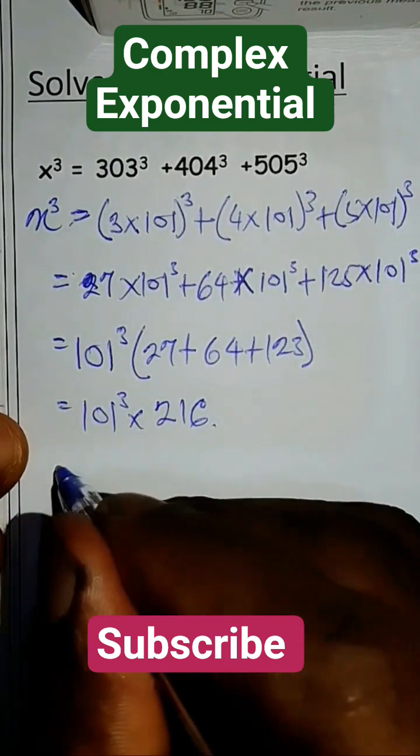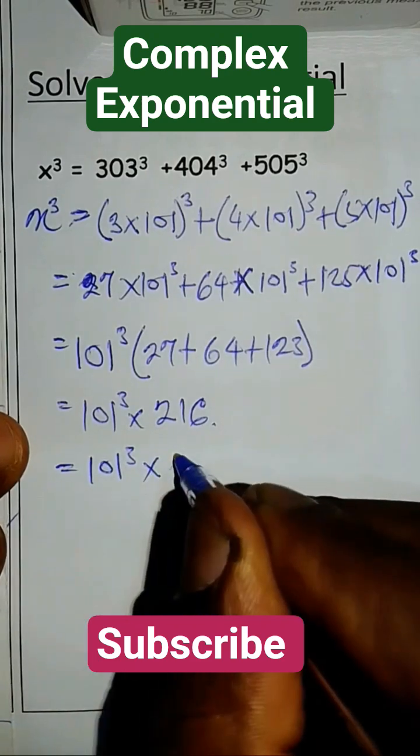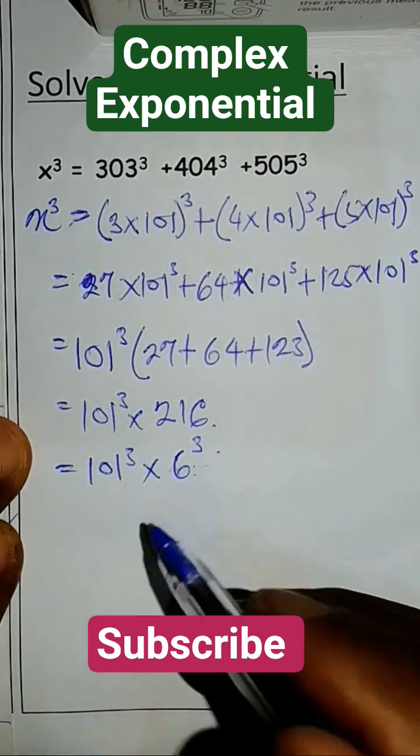So if we try to compare this to something raised to the power 3, what do we have? We have 101 raised to the power 3 times 6 raised to the power 3. You can see they have the same power.